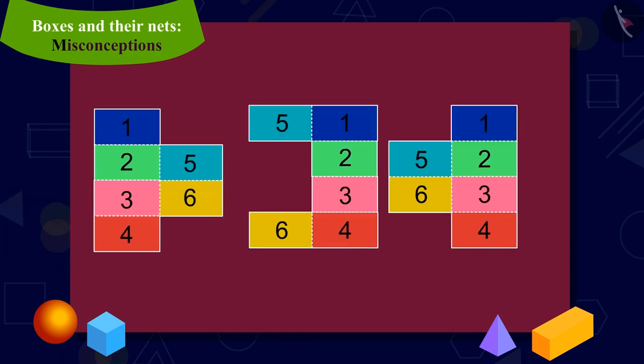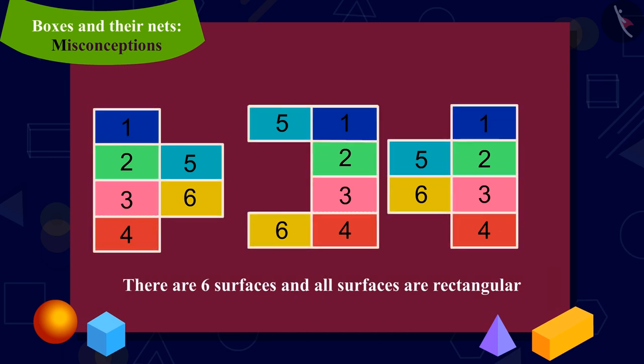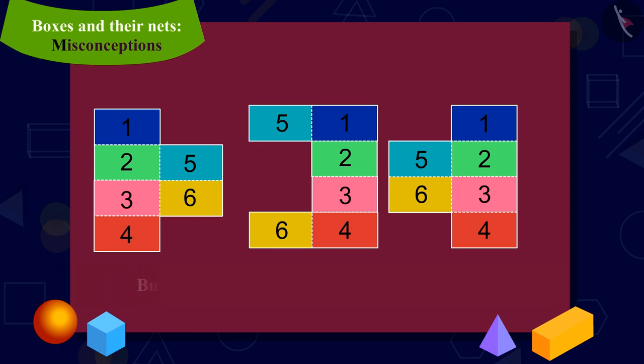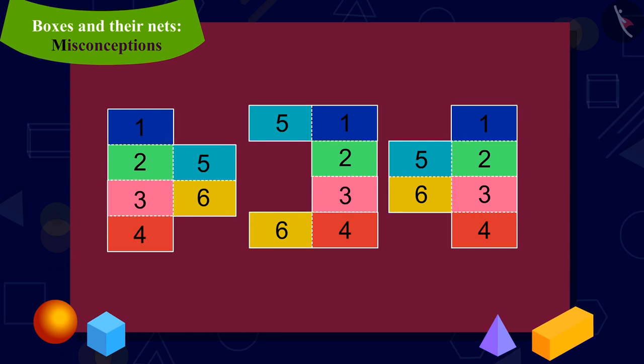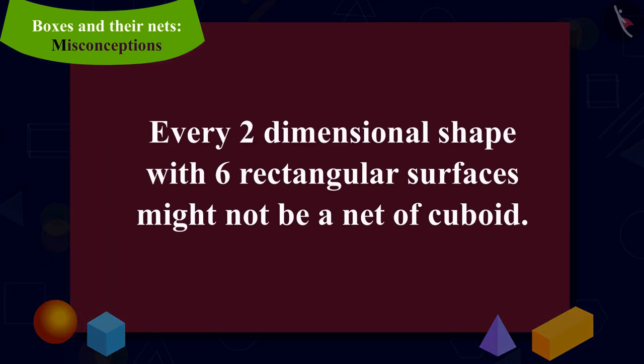Kids, is it possible to have more such shapes which have six surfaces and all the surfaces are rectangular also, but we cannot make a cuboid by folding them? Every two-dimensional shape with six rectangular surfaces might not be a net of a cuboid.